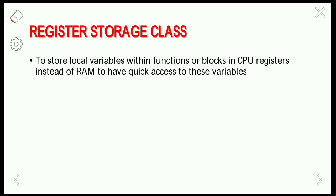We store local variables within functions or blocks in CPU registers instead of RAM to have quick access to these variables. The basic purpose of using the register storage class is that we can access the variables faster compared to memory — in registers we can access data very quickly.